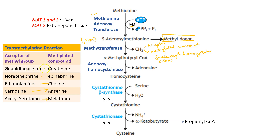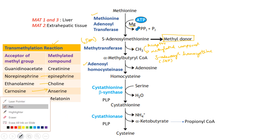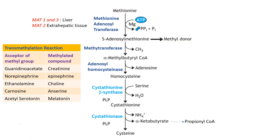Guanidino acetate forms creatine. All transmethylation reactions require S-adenosyl methionine as the methyl donor. SAH is then converted to homocysteine with the help of adenosyl homocysteinase. This homocysteine can now undergo two fates.